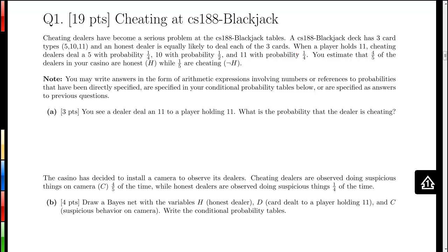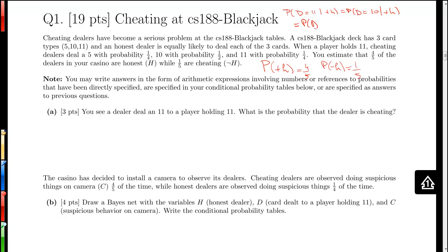So what are we given here? We're given, using the notation from lecture, that the probability of plus H (honest) is 4/5, and the probability of negative H (cheating) is 1/5. We're also given that when we know it's an honest dealer, all cards are equally likely. So for honest dealers, the probability of dealing an 11, a 10, or a 5, given an honest dealer, is all equal to 1/3.